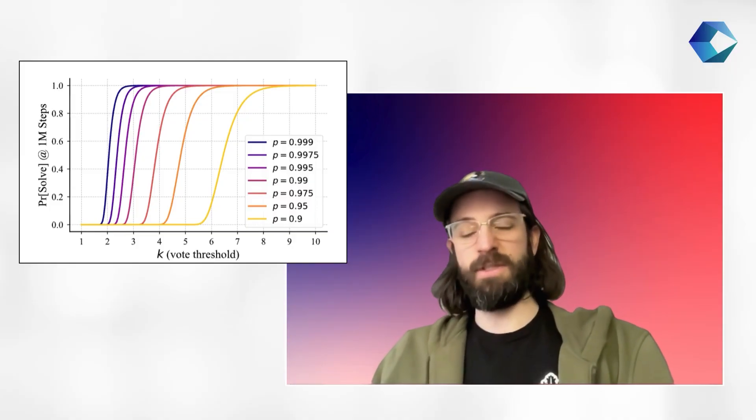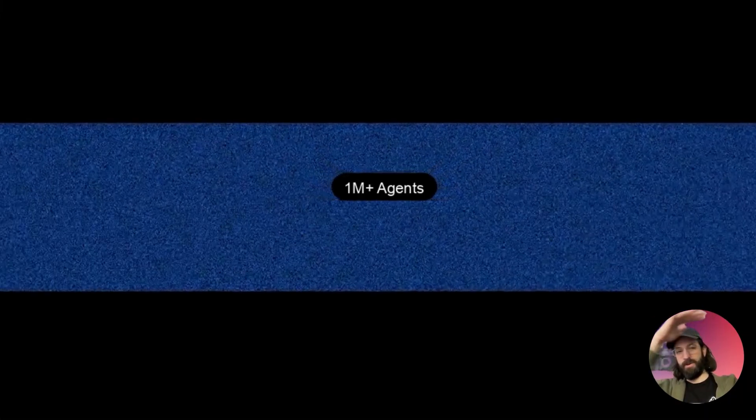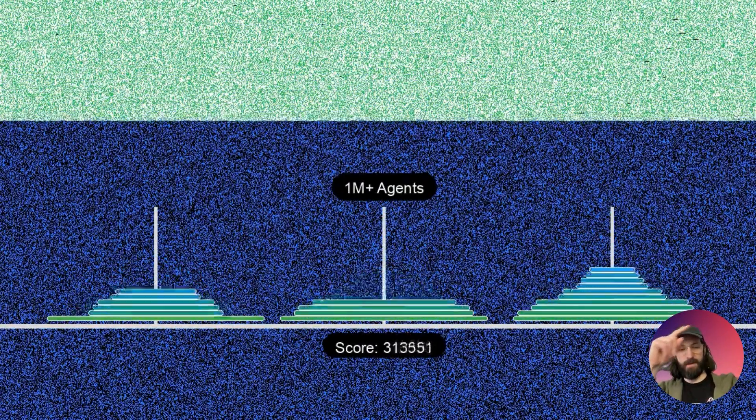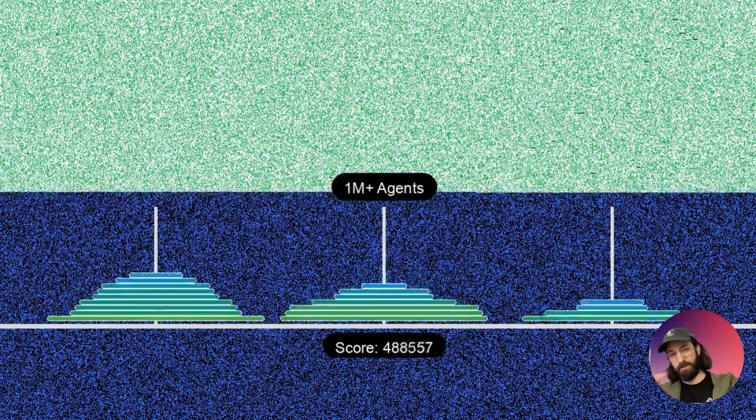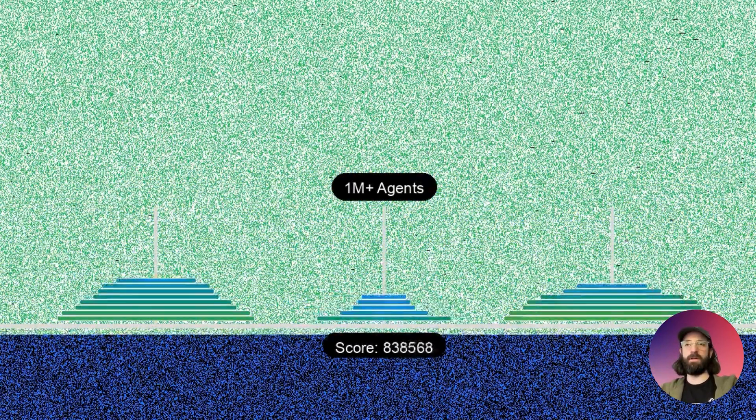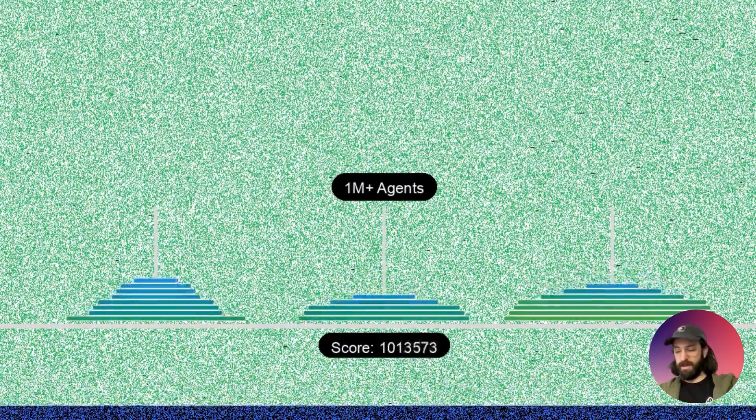We show that by taking this extreme decomposition coupled with the voting-based error correction, we can scale to 20 discs which is over a million. This video illustrates the sheer scale of how that works where each blue dot represents a step, and when that step is solved it turns green. It completes the entire task with zero errors and in theory it can scale far beyond this.